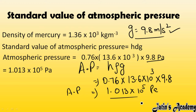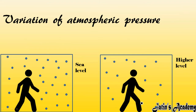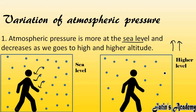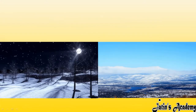Next, we have variation of atmospheric pressure — how atmospheric pressure changes from place to place. Atmospheric pressure is more at sea level: when moving deeper toward the earth, particles come very close to each other and exert more and more pressure. But at higher altitudes, particles expand and move away from each other, exerting less pressure. So at sea level atmospheric pressure is high, and at higher altitude it is less.